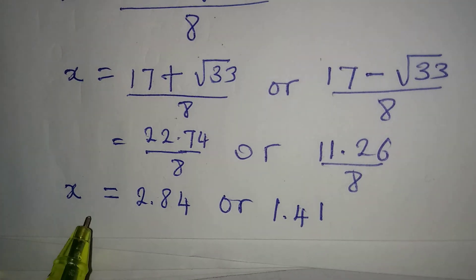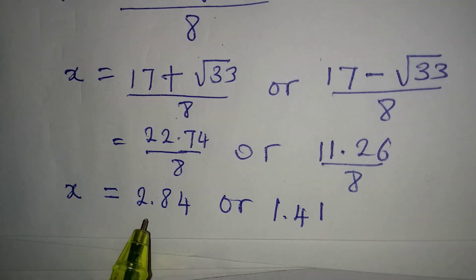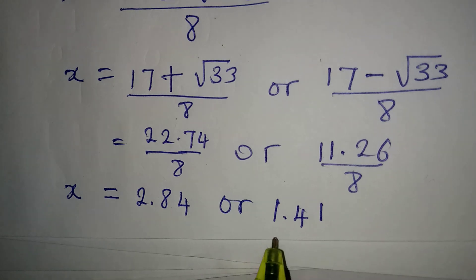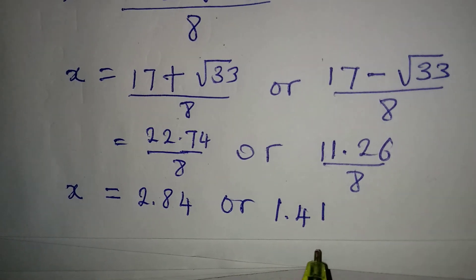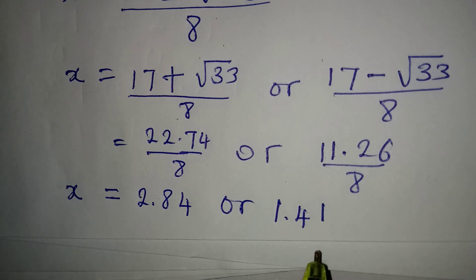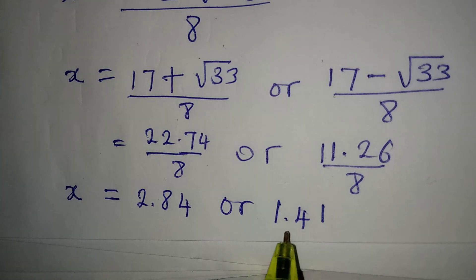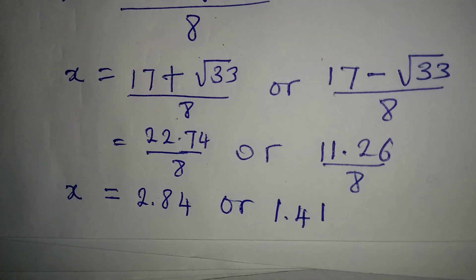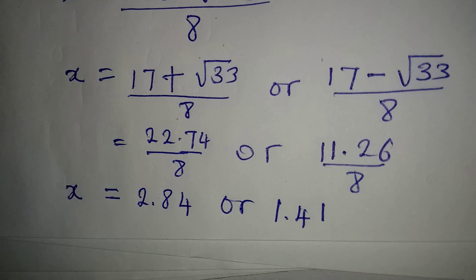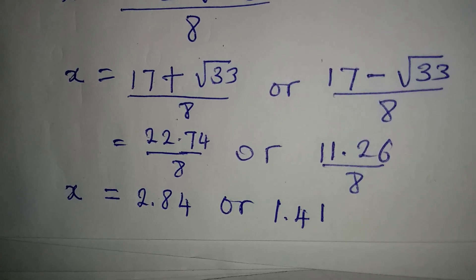So in decimal form, x equals approximately 2.84 or 1.41. You can put both values of x into the original equation to check, because both of them may not satisfy the equation. Thank you for watching, and do share with your friends.